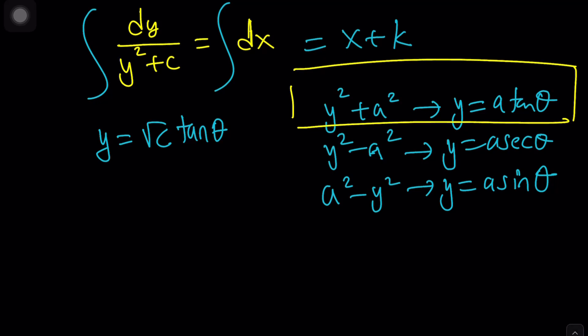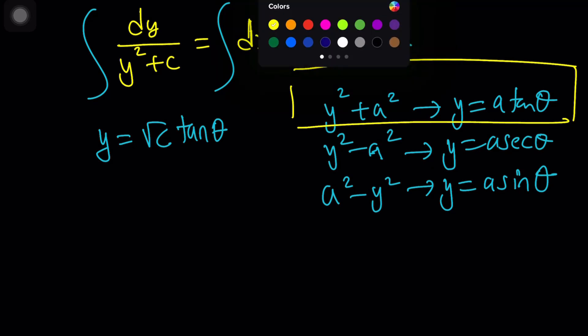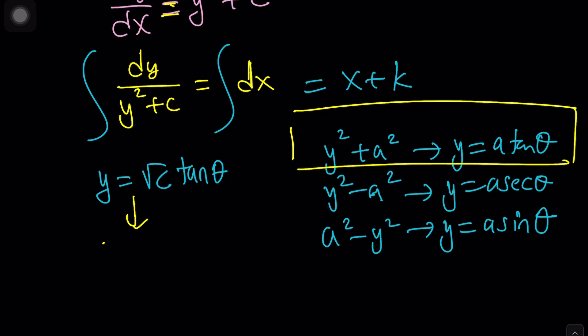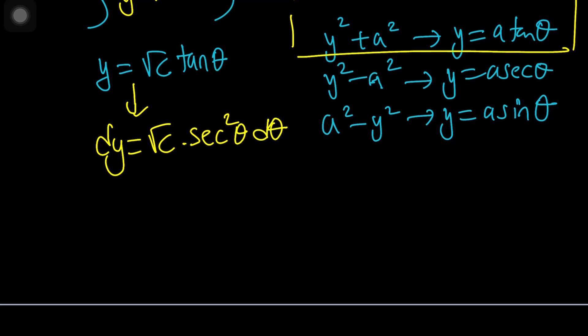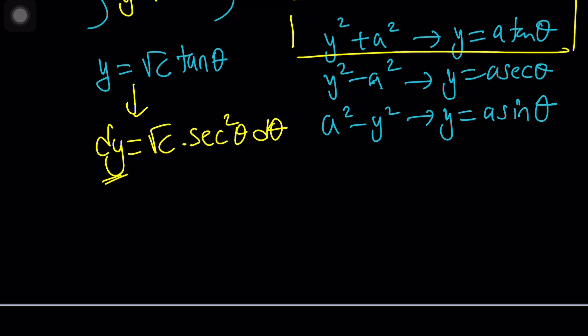Now, in this case, a happens to be square root of c, because we have to square root it. And now, from here, we need to evaluate dy. So dy is just going to be the derivative of this expression. dy equals the square root of c times the derivative of tangent theta, which is secant squared theta. Remember that? And of course, I need to multiply it by d theta, because that's a dy.